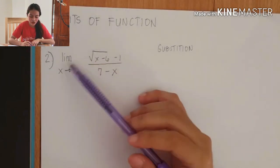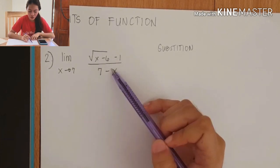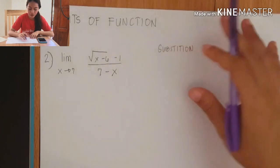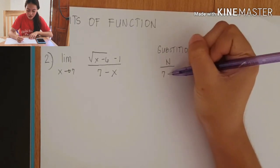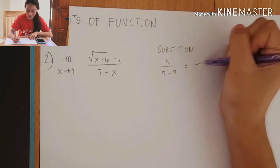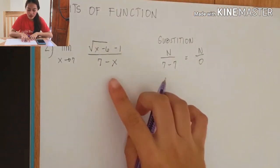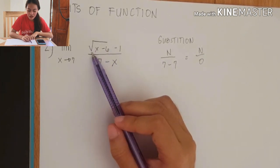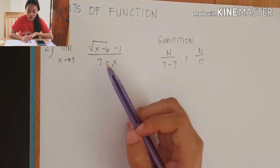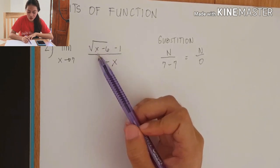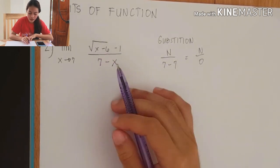The next expression is the limit of (√(x − 6) − 1) over (7 − x) as x approaches 7. Substituting gives 0 in the denominator, so we proceed to the next technique. Since this involves a radical (square root), we rationalize by multiplying by the conjugate where the radical is present. The radical is in the numerator, so we multiply numerator and denominator by (√(x − 6) + 1).